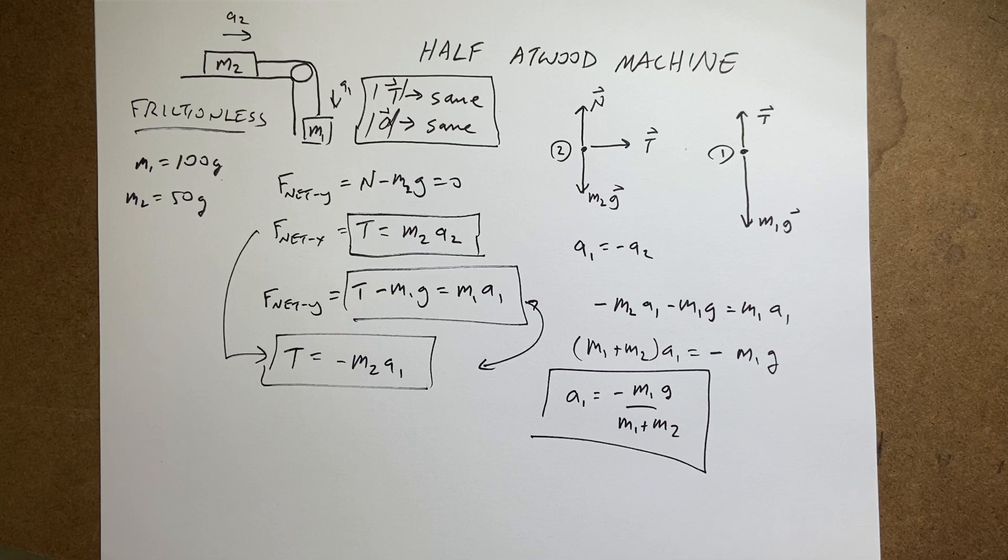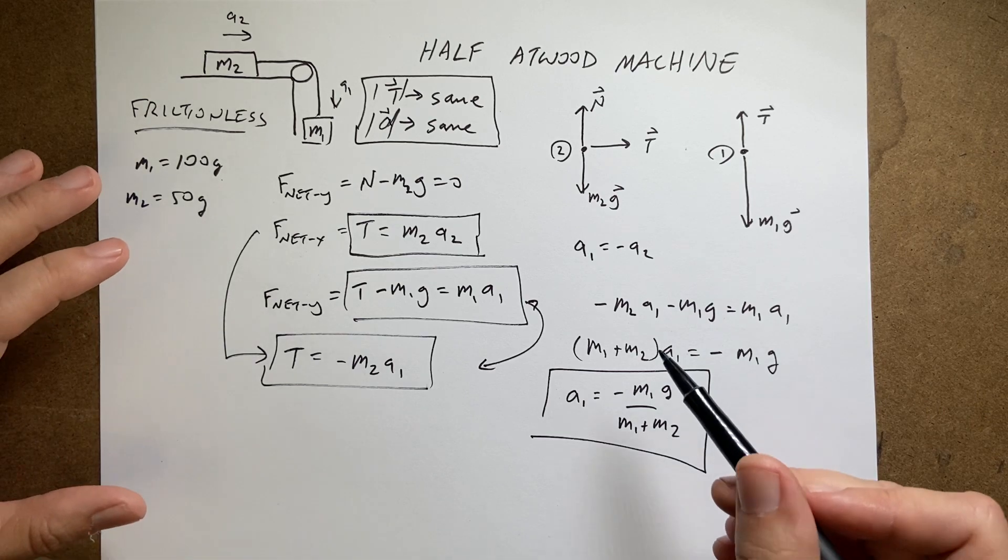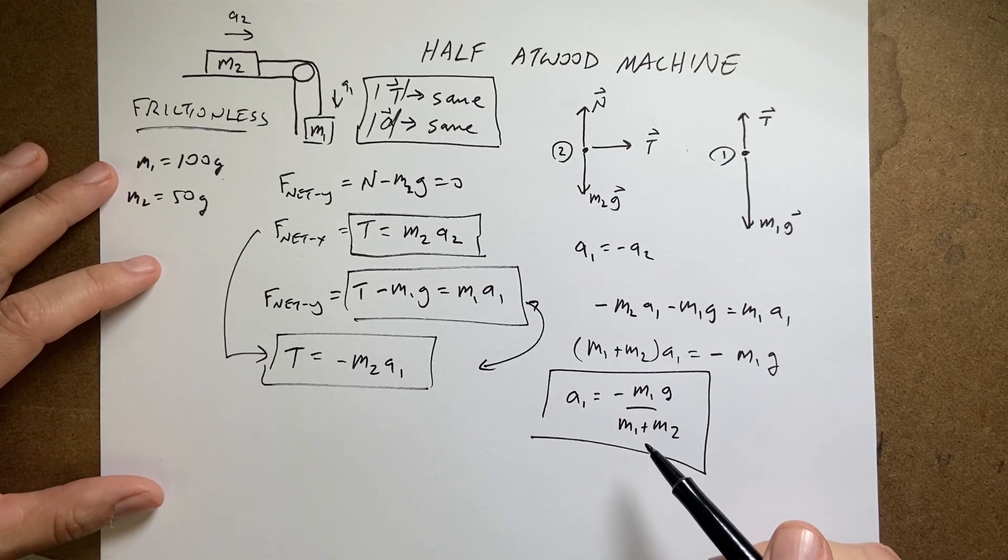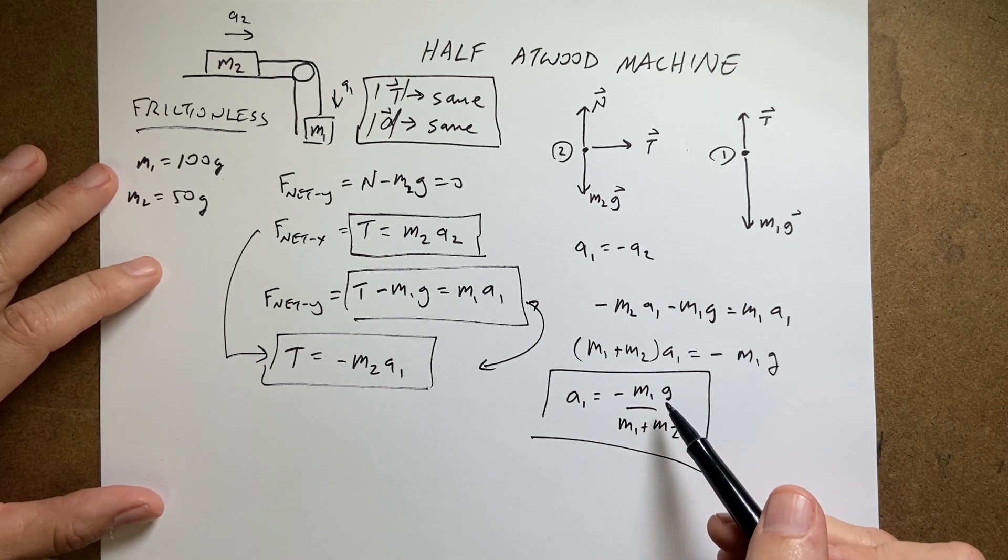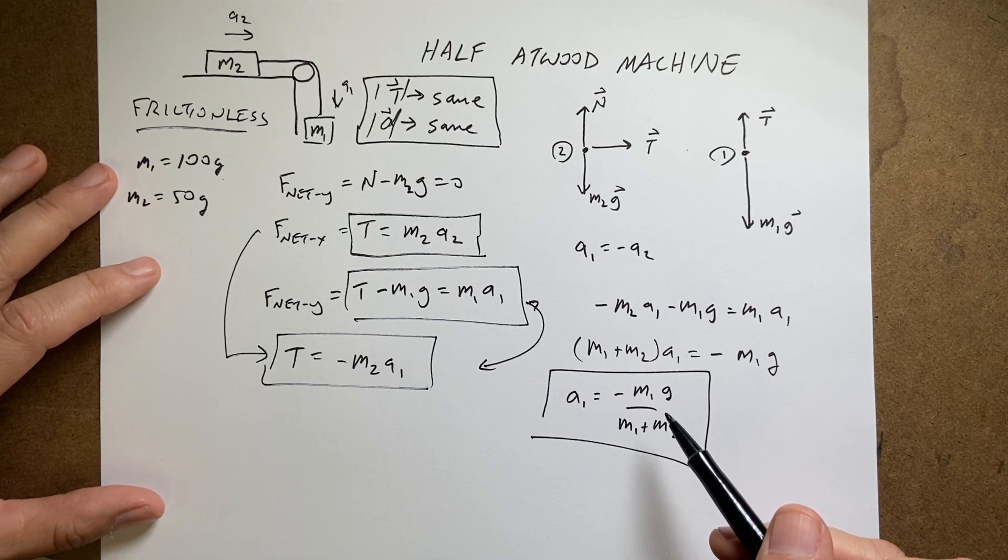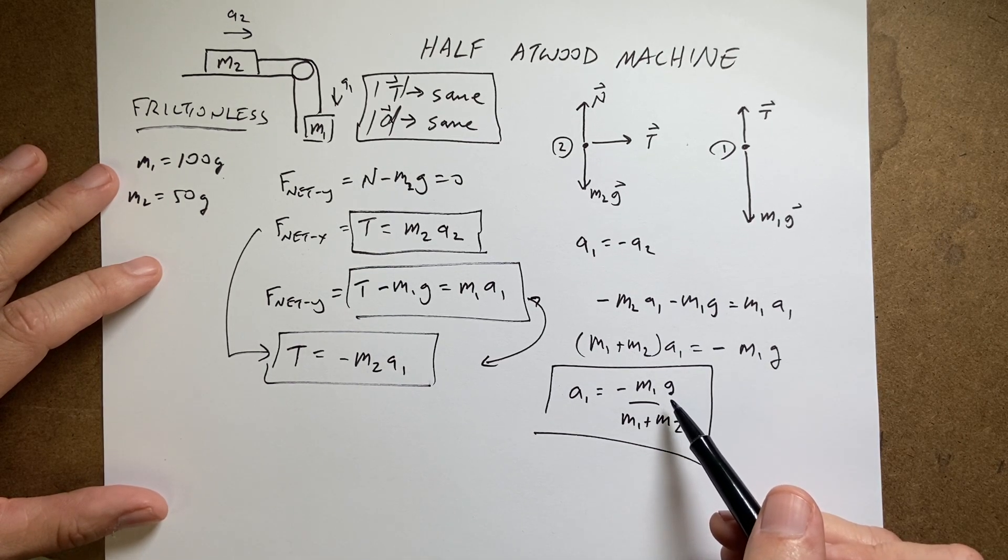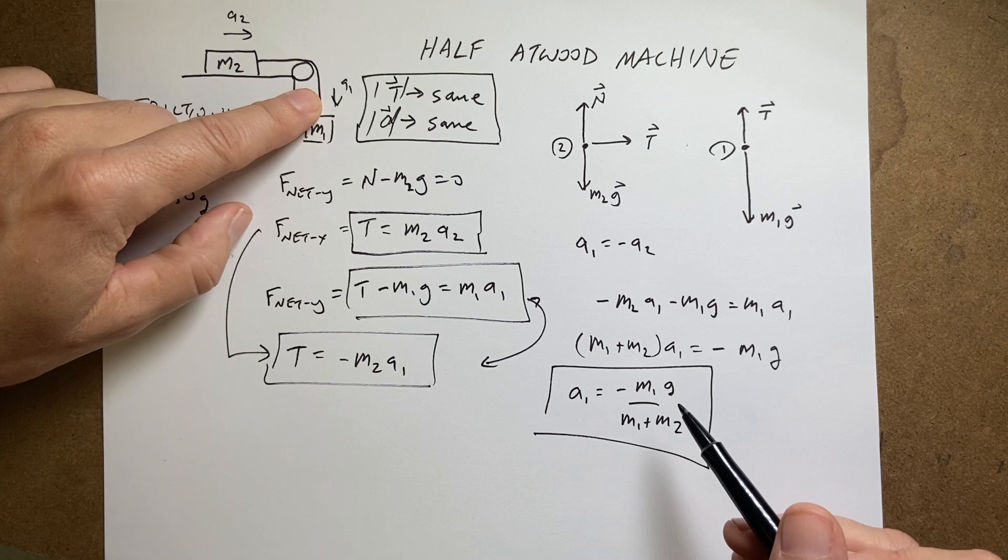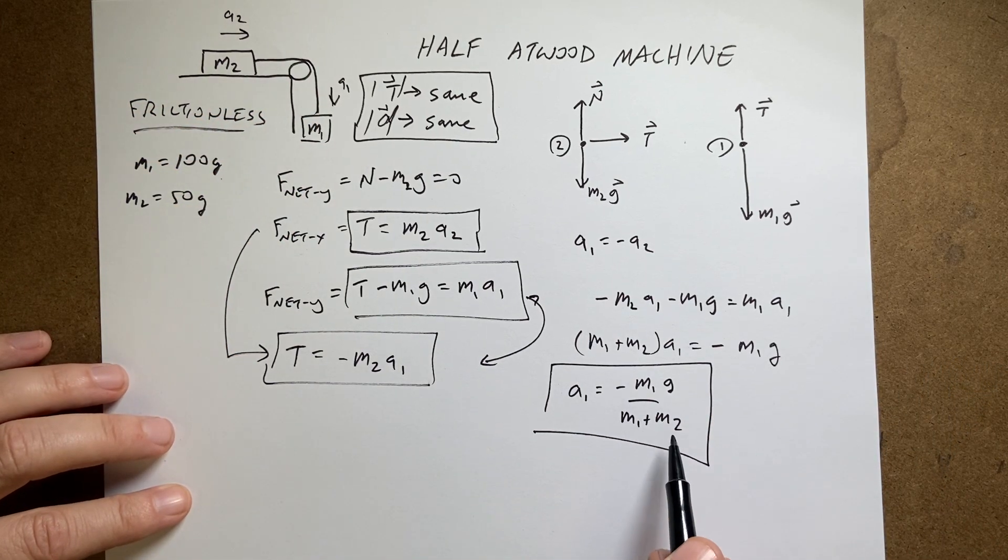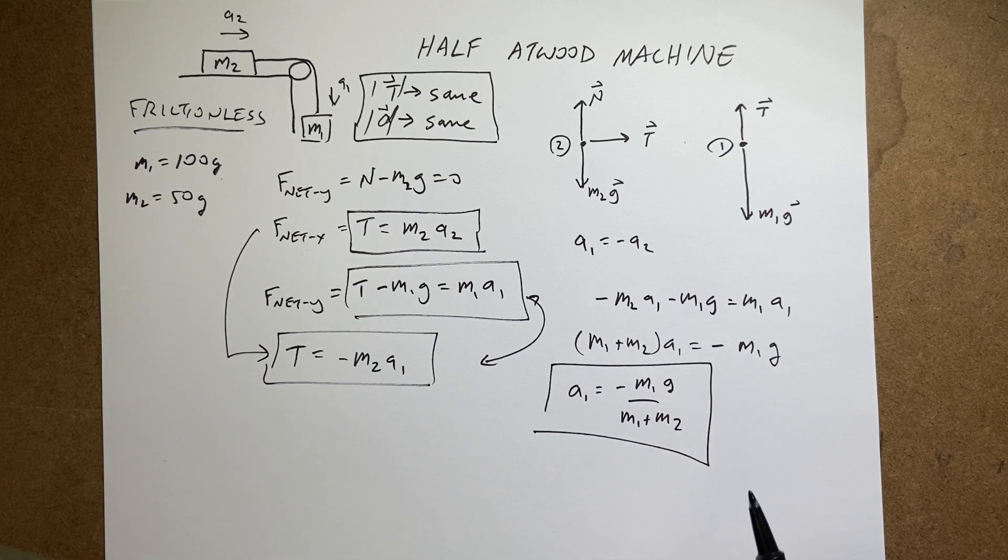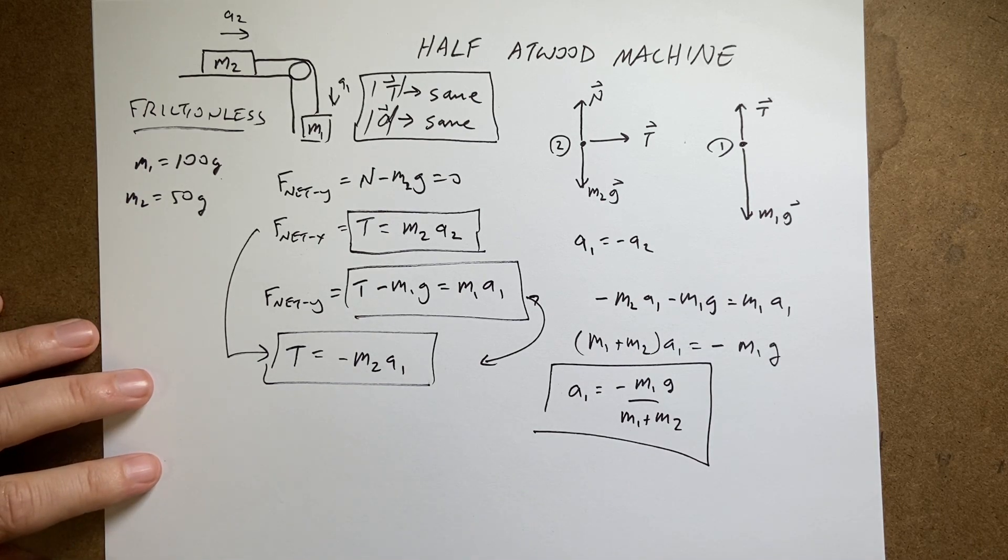So again, we should check some things. Does this have units for acceleration? Well, I have mass on the top and I have units of mass on the bottom that are going to cancel. So I get units of newtons per kilogram, which is g. But a newton per kilogram is a meter per second squared. So this is units for acceleration. I've already said the acceleration should be in the negative y direction and it is, right? Because everything here is positive and I have a negative sign. So I do get a negative acceleration. So this is good.